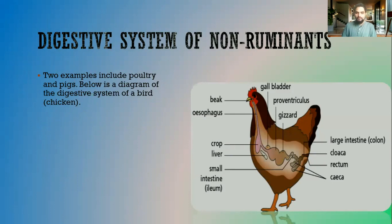Two examples of non-ruminants that I have here would be poultry and pigs. So we have a diagram here that is a typical example of a bird, of a chicken.